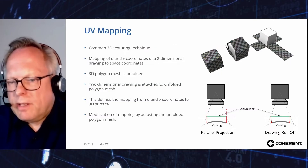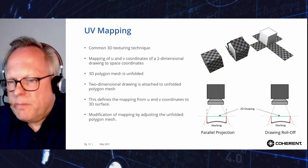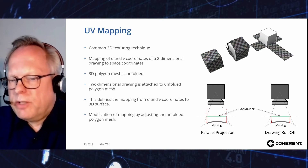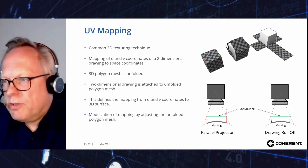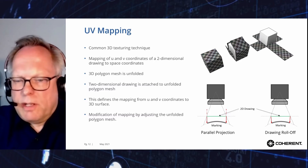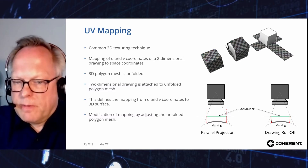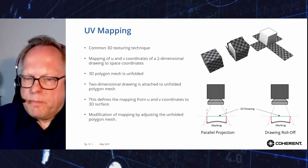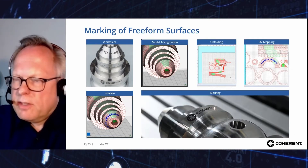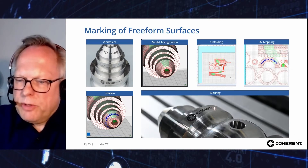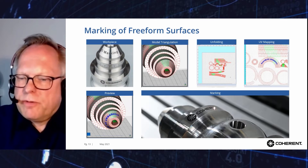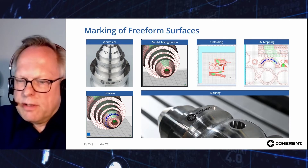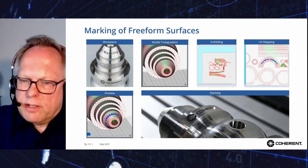UV mapping is used whenever freeform surfaces must be marked. UV mapping allows unfolding the triangulated surface mesh of the object and mapping a texture to the mesh — a technique well known in computer graphics. The unfolded mesh of the object's surface can further be modified by moving individual vertices to other locations, allowing marking results to be tailored to avoid undesired distortion effects.